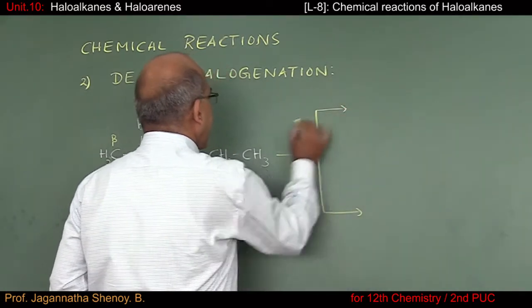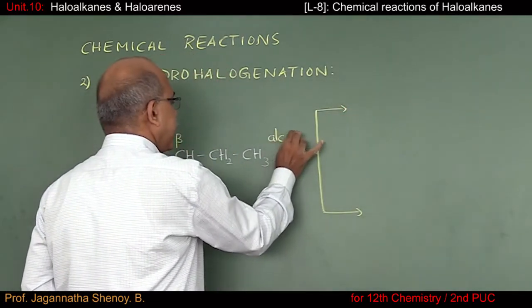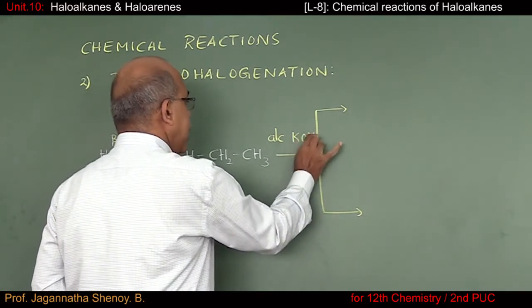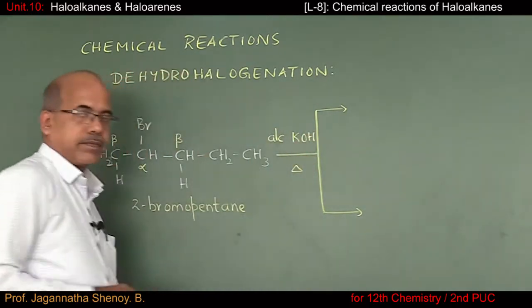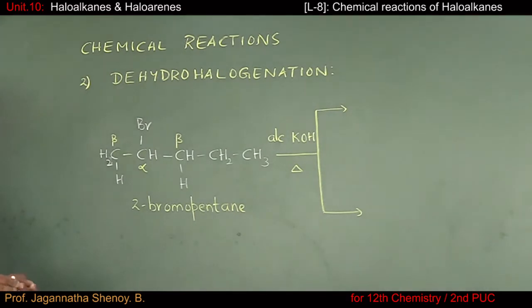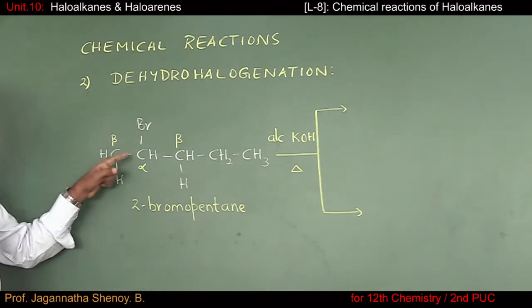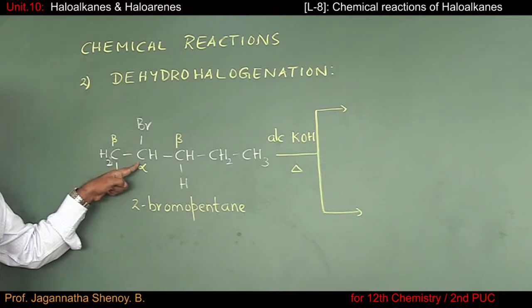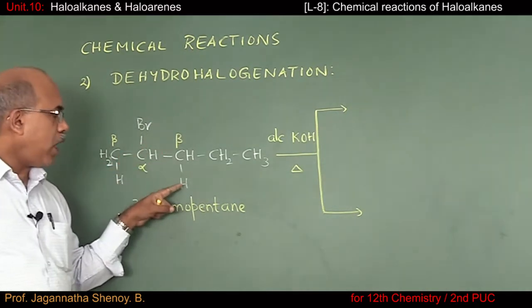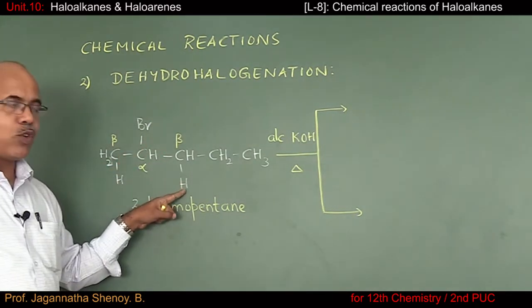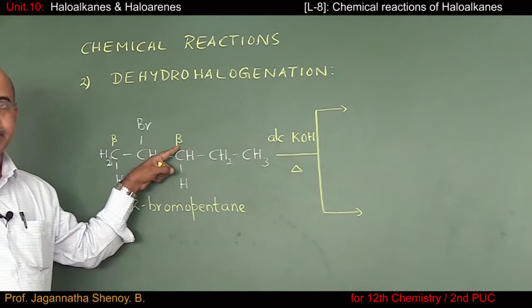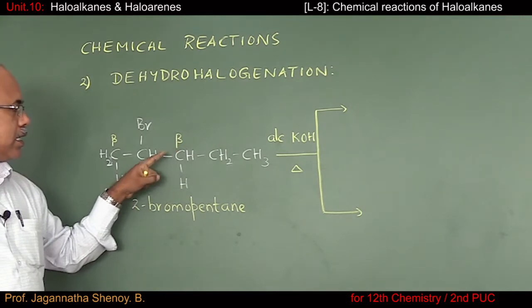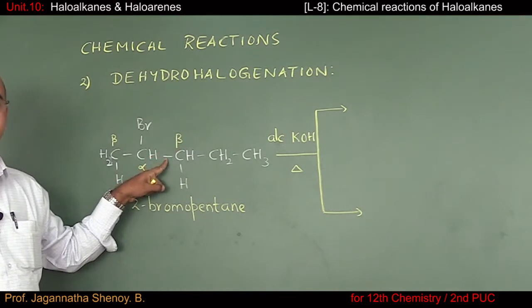Now I want to carry out the dehydrohalogenation reaction using alcoholic potash with heat. Dehydrohalogenation can take place in two different ways. In the first case, I consider removal of the halogen atom from the alpha carbon atom and removal of hydrogen from this beta carbon atom. As a result, a double bond gets introduced here.